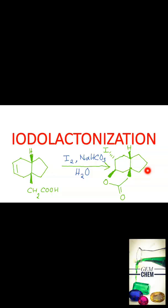Welcome to Jam Camp. Today's video is on iodolactonization, which is a property of alkenes. This is an organic reaction where we see the formation of a lactone ring and an incorporation of iodine across a C=C double bond. The lactone ring contains the ester group in a cyclic form. In this reaction we use iodine, NaHCO₃, and water.